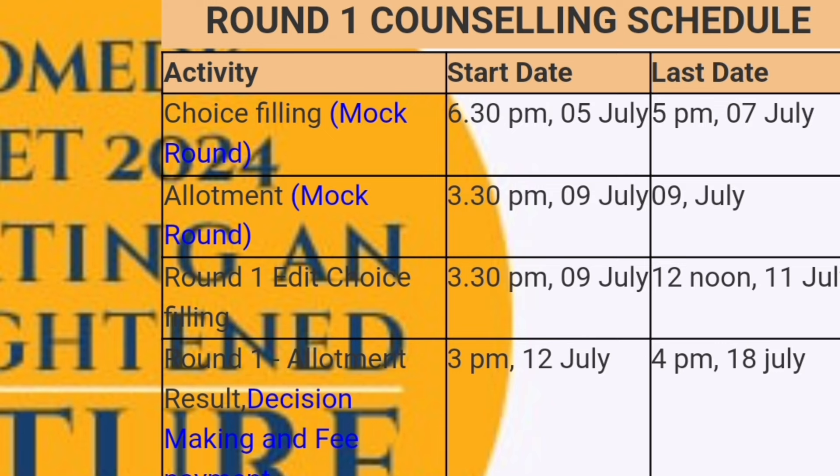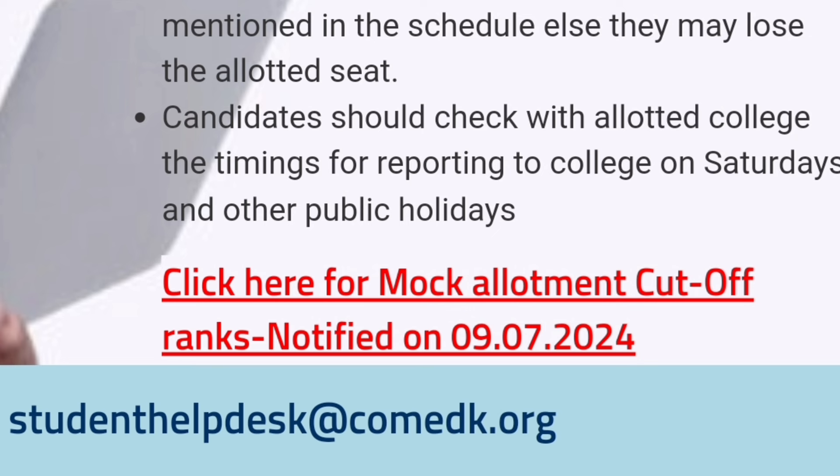This is available on the comedk.org main website. If you go on the main page, you will see a table talking about the schedule. Below this table, there will be a link which says click here for mock allotment cutoff ranks notified on 09/07/2024, and that is today it is released.